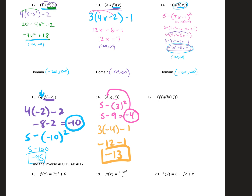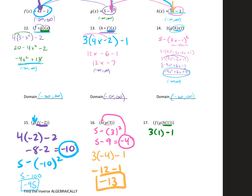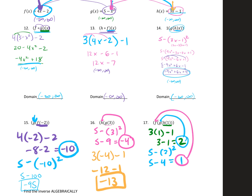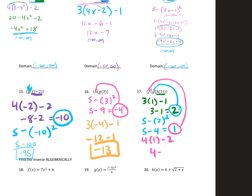For number 17, we plug into all three functions. Start with the innermost — plug 1 into H: 3 times 1 minus 1 equals 2. Then plug 2 into G: 5 minus 2 squared equals 1. Then plug 1 into F: 4 times 1 minus 2 equals 2. So our final answer is 2.